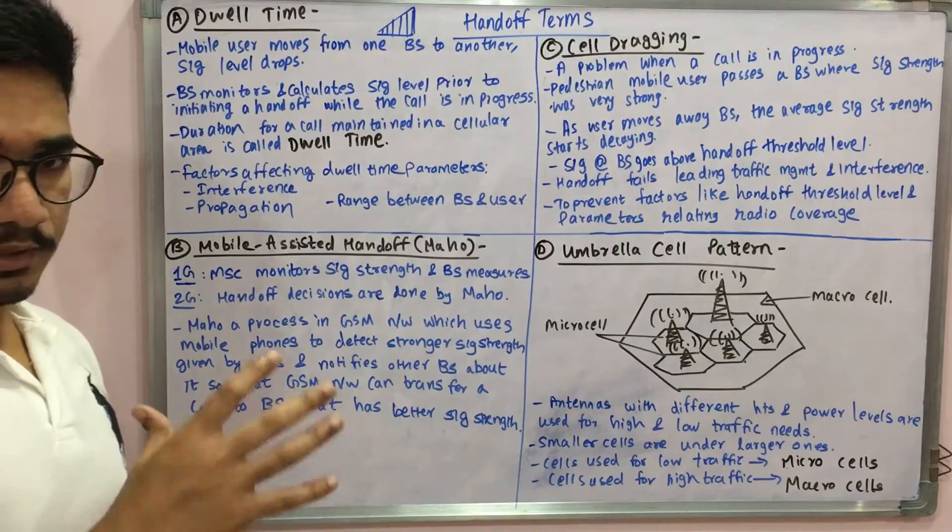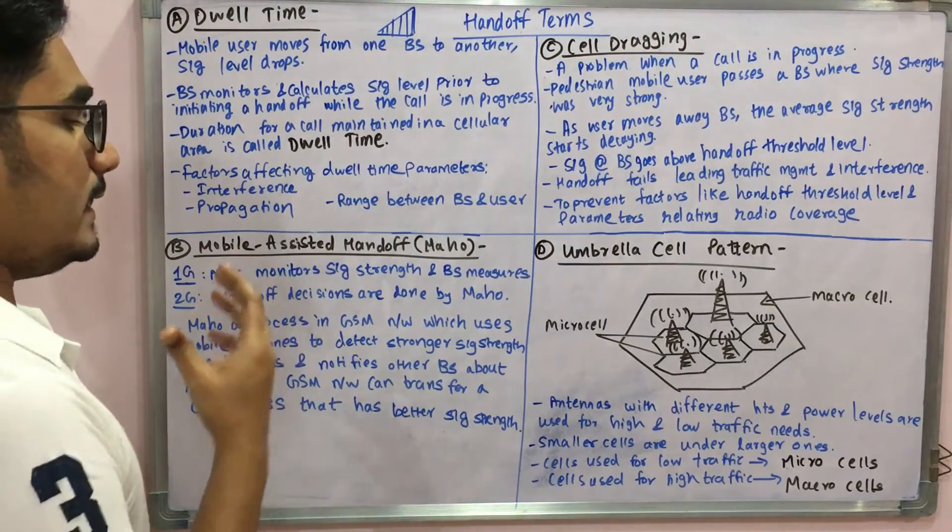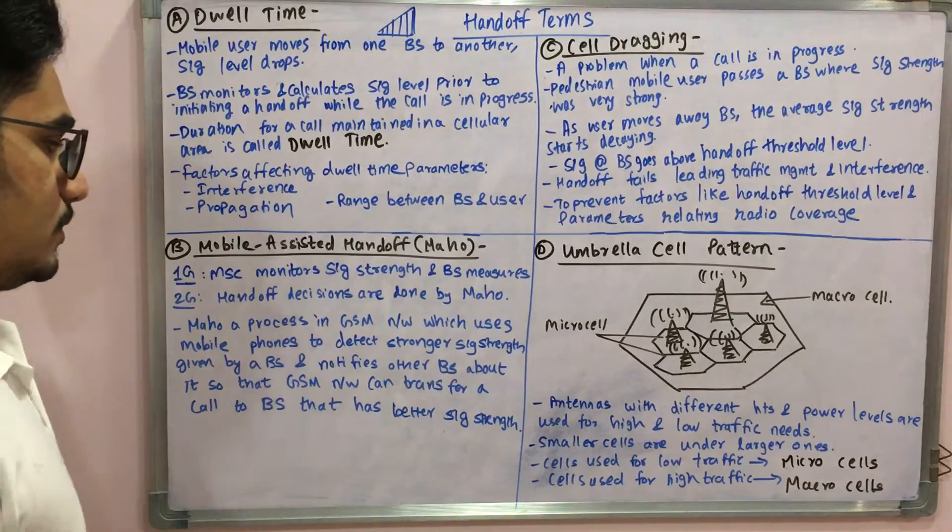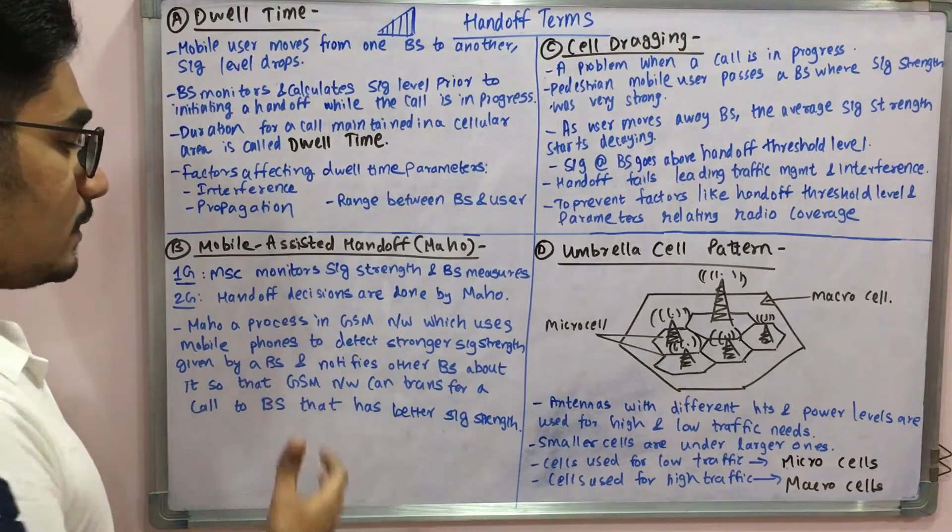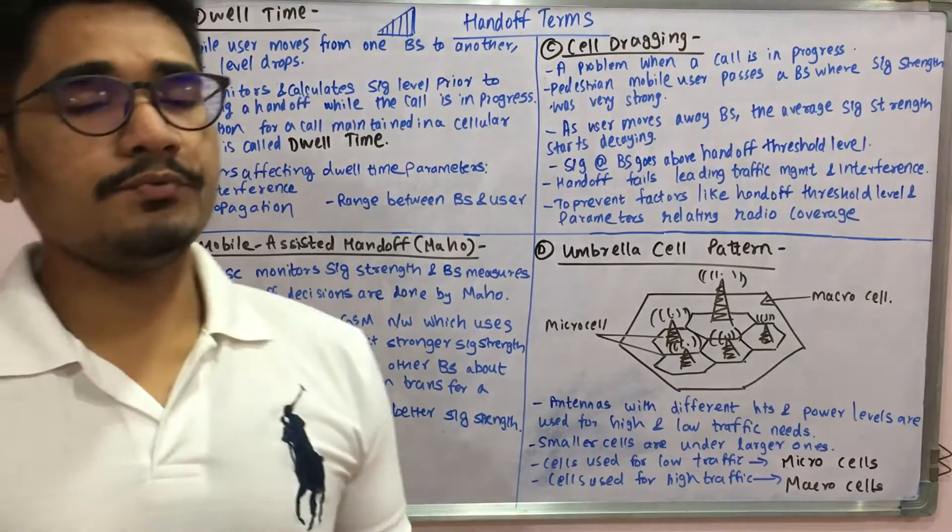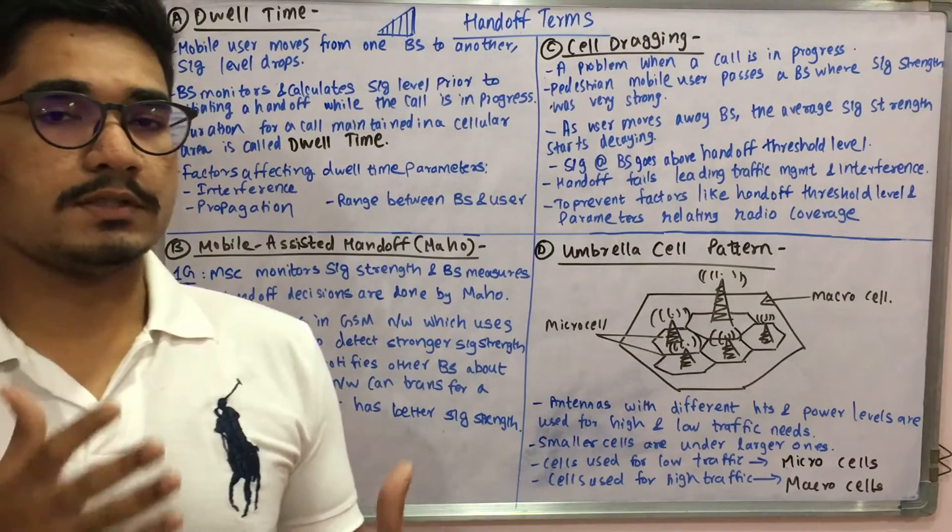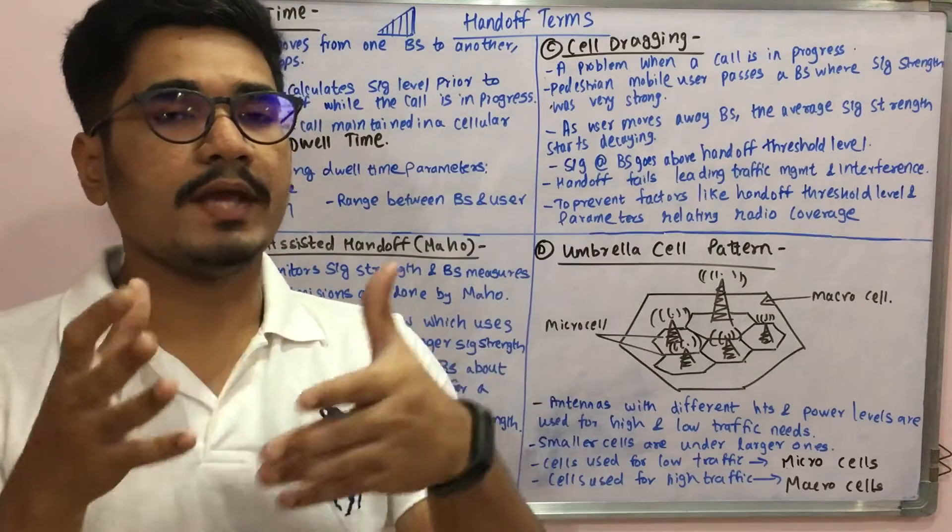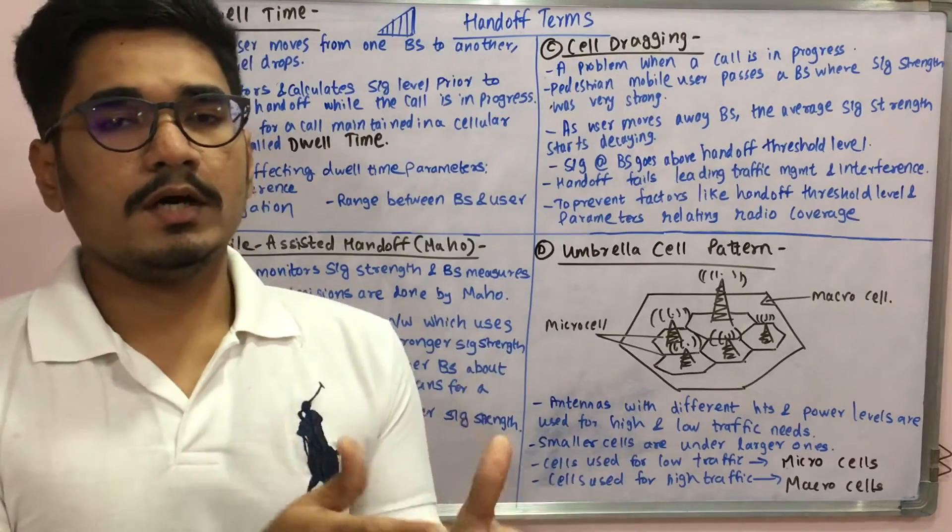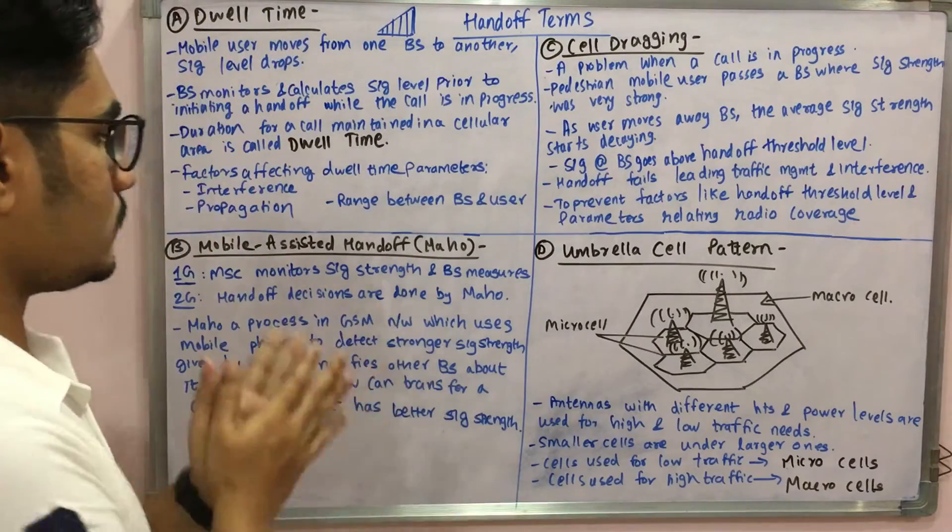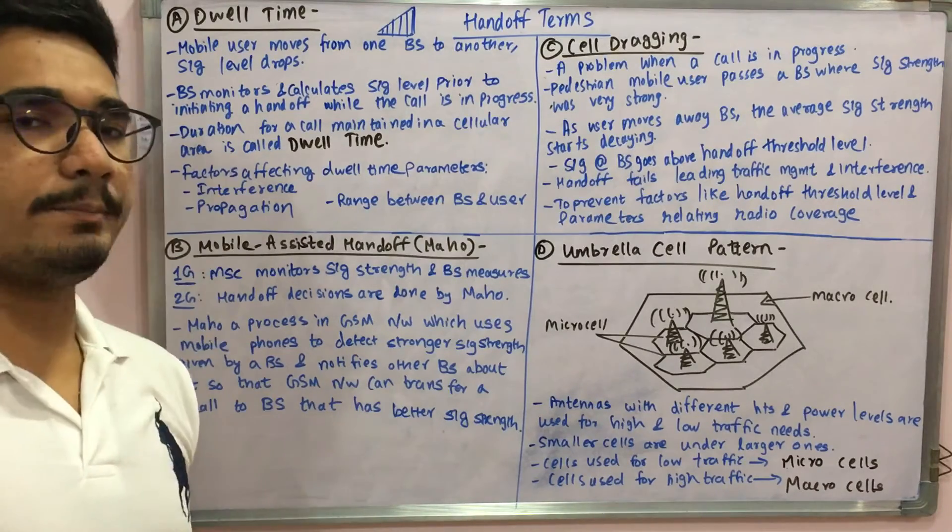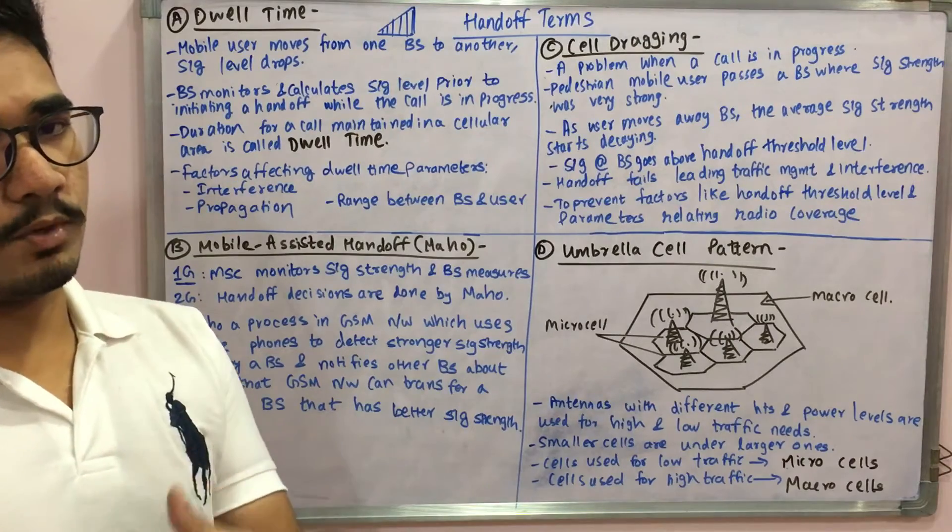MAHO is a process in the GSM network which uses mobile phones to detect stronger signal strength given by a base station and thereby notifies other base stations about it, so that in the future the GSM network can transfer a call to another base station that has better signal strength. The mobile phone decides or gets the information about the signal strength and it notifies other base stations regarding which signal is proper at which cellular area.